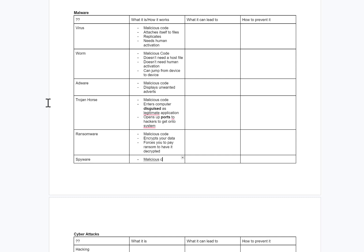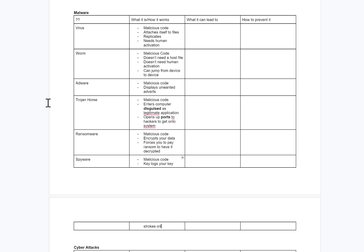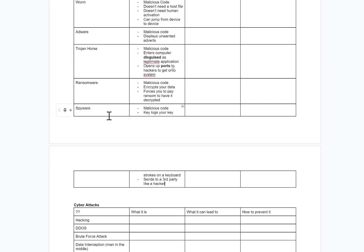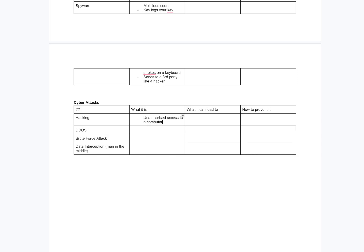Spyware: malicious code that key-logs your keystrokes on a keyboard and sends them to a third party like a hacker. So whatever you're typing on a keyboard, it sends that to a hacker. Hacking: unauthorised access to a computer.